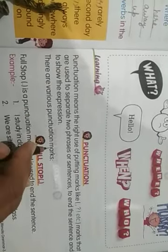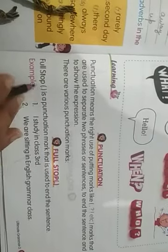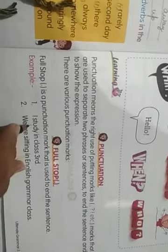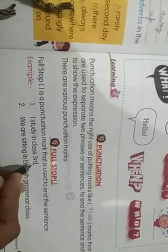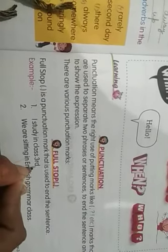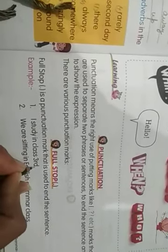There are various punctuation marks. Hamare kai prakar ki Viramchin hoti hai. Sabse pahle hai humara full stop. Full stop is a punctuation mark that is used to end the sentence. Full stop woh Viramchin hai jiske dwara hum vaqyay ko khatam karte hai ya vaqyay ke ant mein lagate hai. For example: 'I study in class third.' — yaha par humara full stop aya, ki main tisri kakshah me padhata houn. Toh yaha par sentence khatam ho gaya, toh end mein full stop lagana hai.